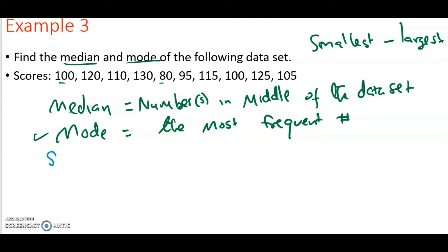So the smallest number I see here is 80. I think 95 is the next one, then 100. There is also another 100, and then there is 105. After 105, I think it's 110. After 110 is 115, then 120, 125, and then 130. So those are the numbers arranged from smallest to the largest.